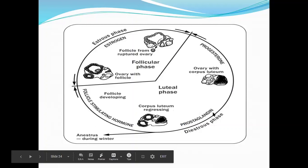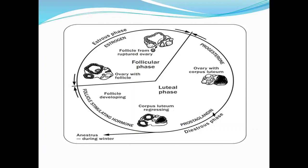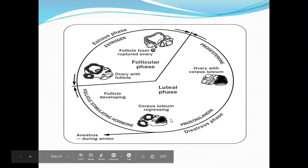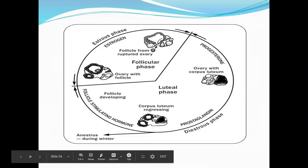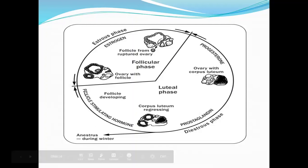Prostaglandin F2-alpha will lyse the corpus luteum. Right after its regression, the follicle-stimulating hormone is released by the anterior pituitary gland to begin the cycle again. Hormones usually act on a feedback mechanism.